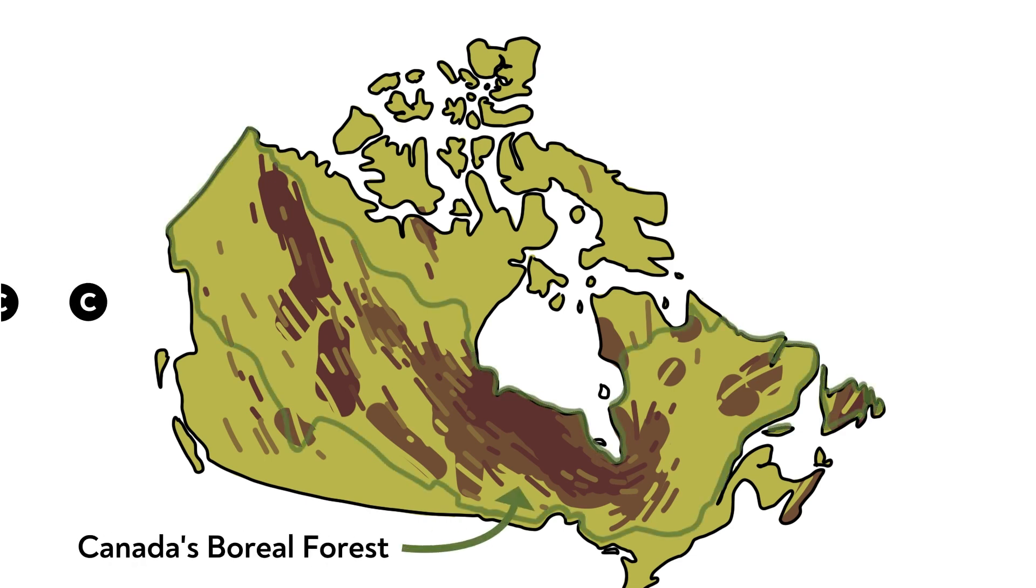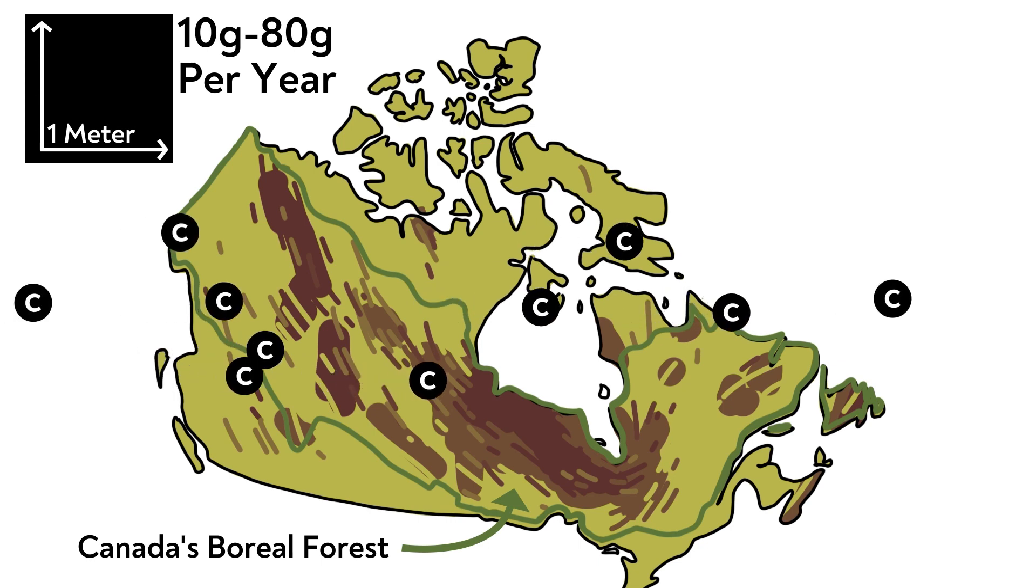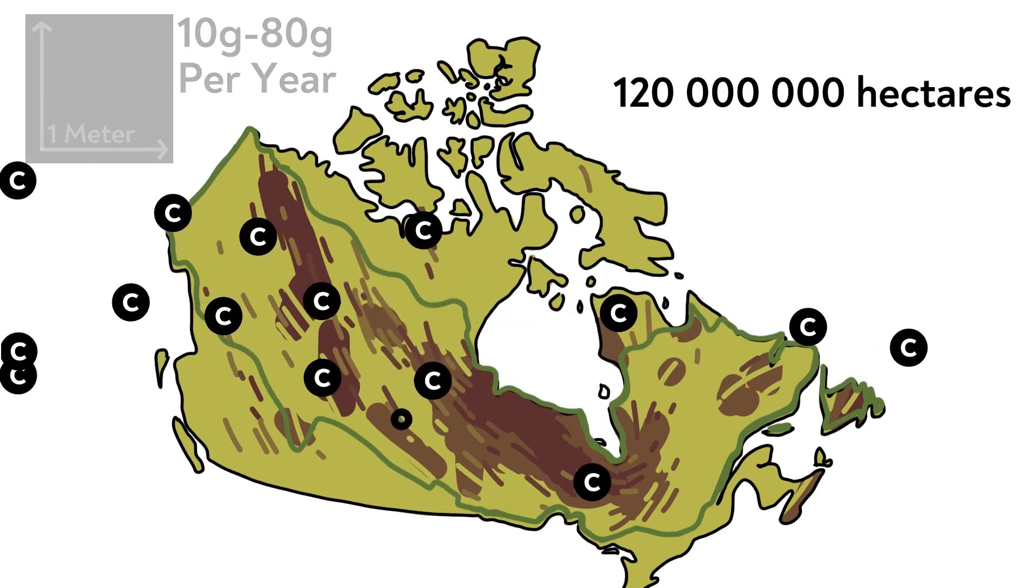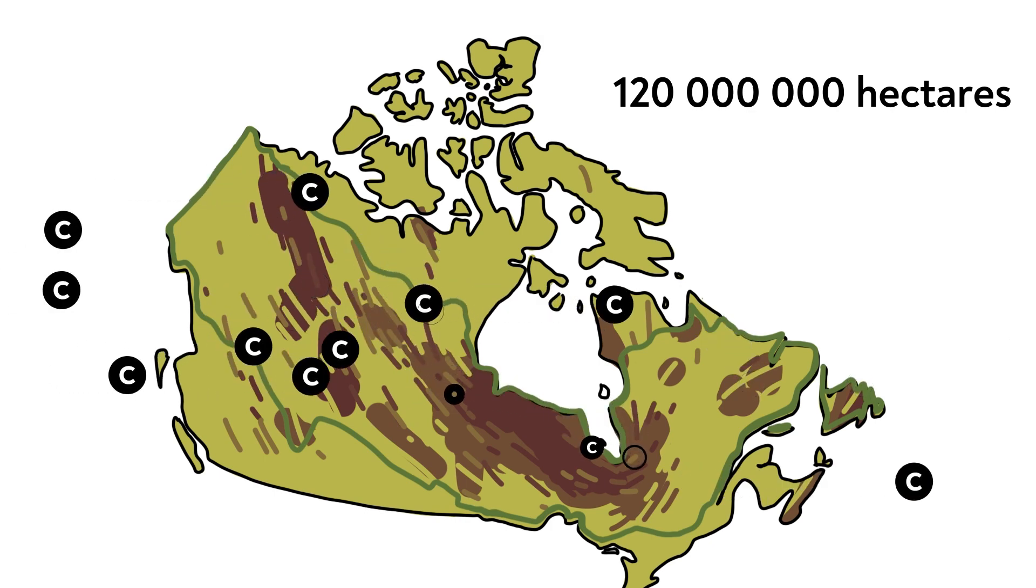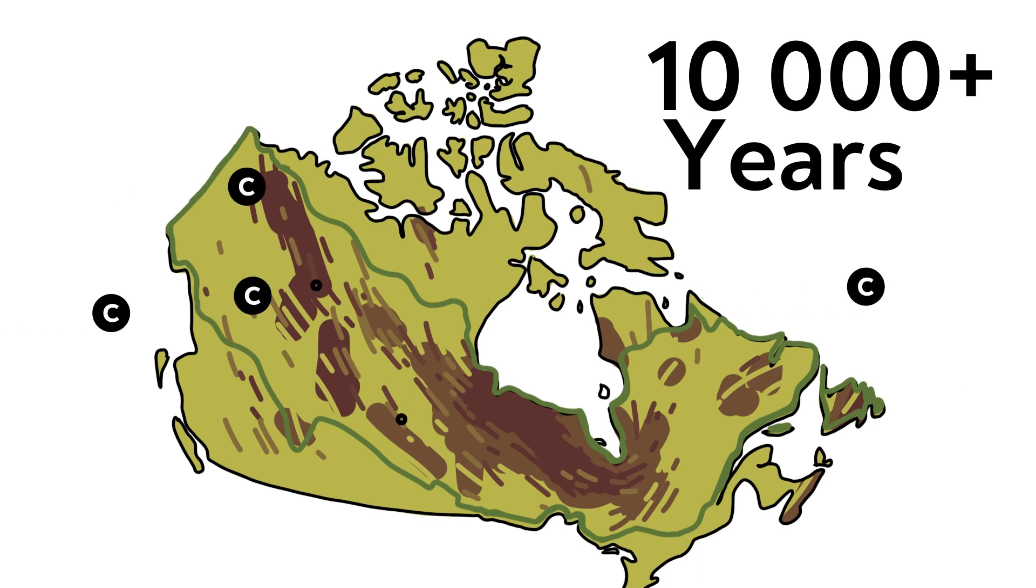Boreal peatlands sequester anywhere from 10 to 80 grams of carbon per square meter per year. This might not sound like much, but consider that they cover 120 million hectares across Canada, and in some cases have been accumulating this carbon for over 10,000 years. It adds up!